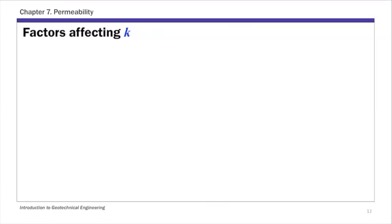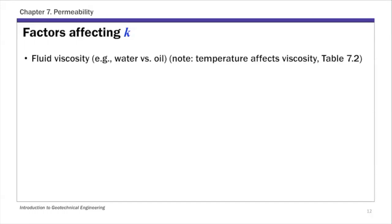As for factors affecting permeability or hydraulic conductivity: first, fluid viscosity affects permeability. In this course we deal with water flow through soil, so the viscosity of water affects hydraulic conductivity. Because temperature affects viscosity of fluids, temperature also indirectly affects hydraulic conductivity. A table gives the change of viscosity with temperature.